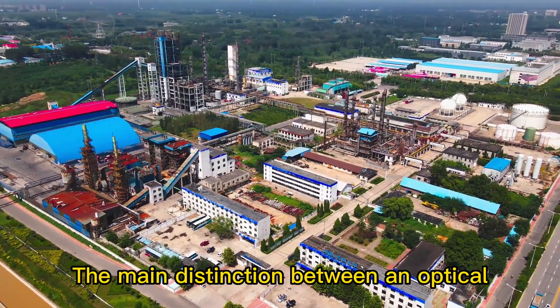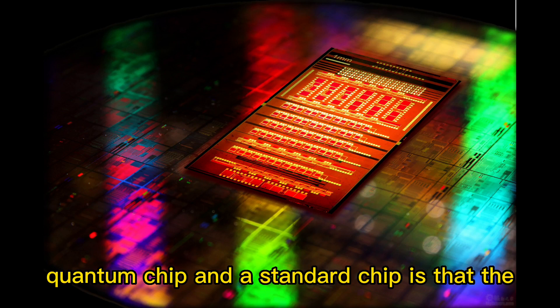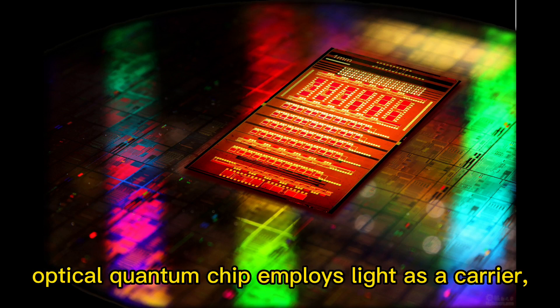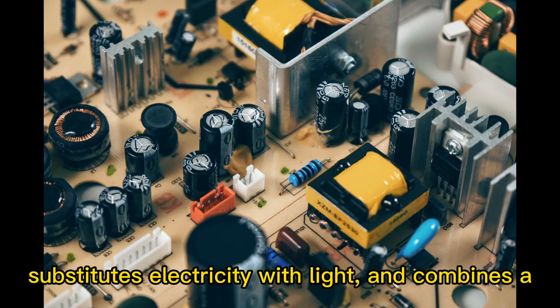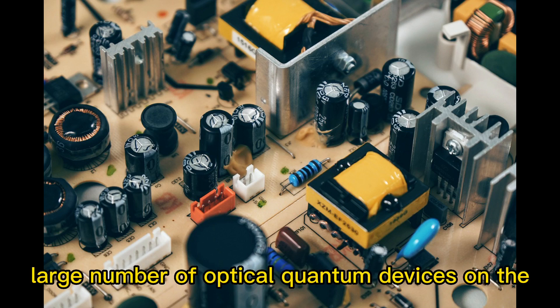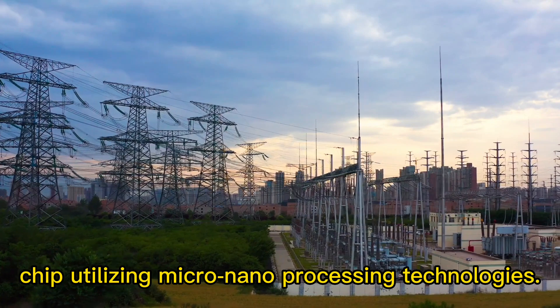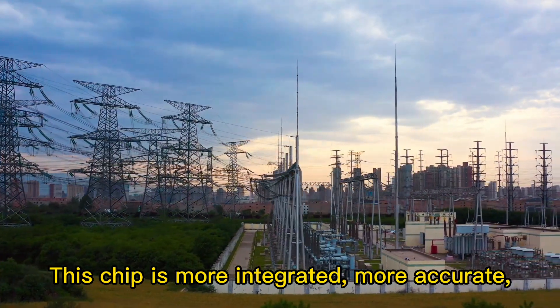The main distinction between an optical quantum chip and a standard chip is that the optical quantum chip employs light as a carrier, substitutes electricity with light, and combines a large number of optical quantum devices on the chip utilizing micro-nano processing technologies.